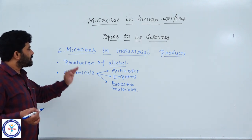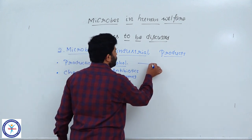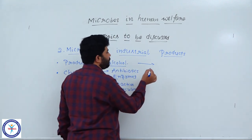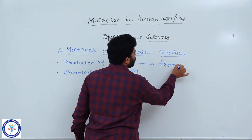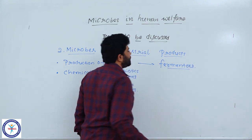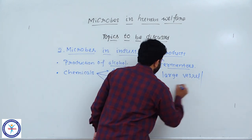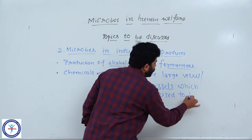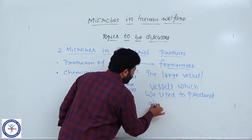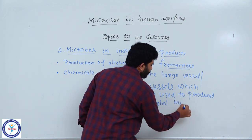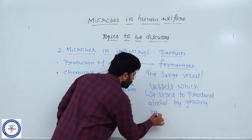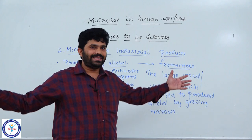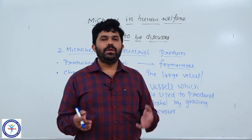Before discussing the production of alcohol, we must focus on the containers in which we produce alcohol. Those containers used for the production of alcohol are called fermenters. Fermenters are large vessels used to produce alcohol by growing microbes — very big tanks in which we produce alcohol using microorganisms.